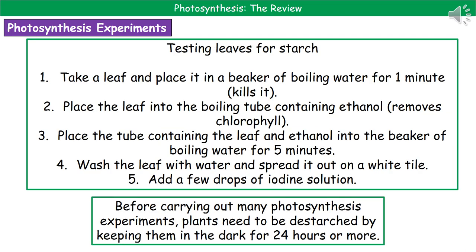While many other scientists carried out various experiments to find out about photosynthesis, you need to know what experiments you could do to prove some of these things are true. The first one is how we test leaves for starch — hopefully you did this as an experiment in class. Take a leaf off the plant, place it in a beaker of boiling water for about a minute, which kills off everything in the leaf.